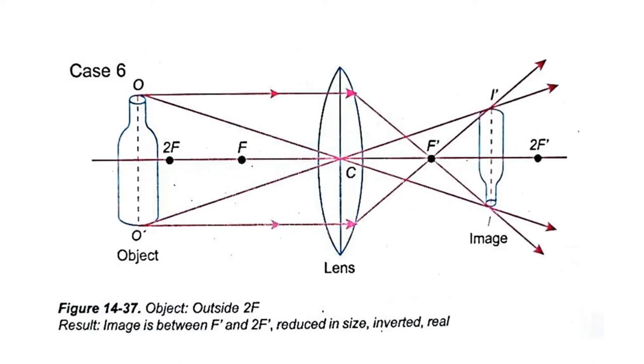Now, for case number six, we put the object outside the 2F position. The image that was formed is between F prime and 2F prime. It is reduced in size, inverted, and considered real.